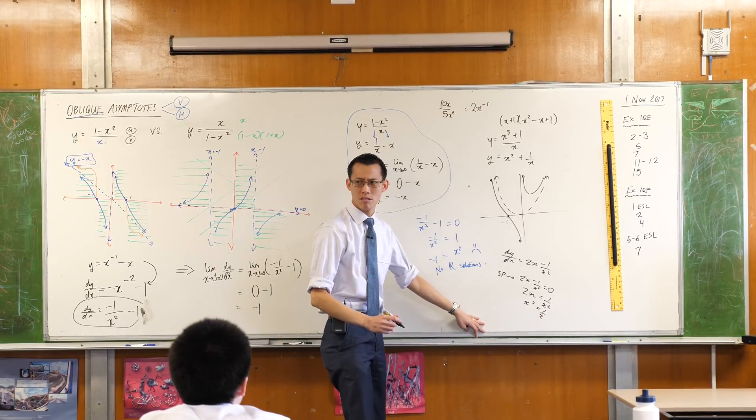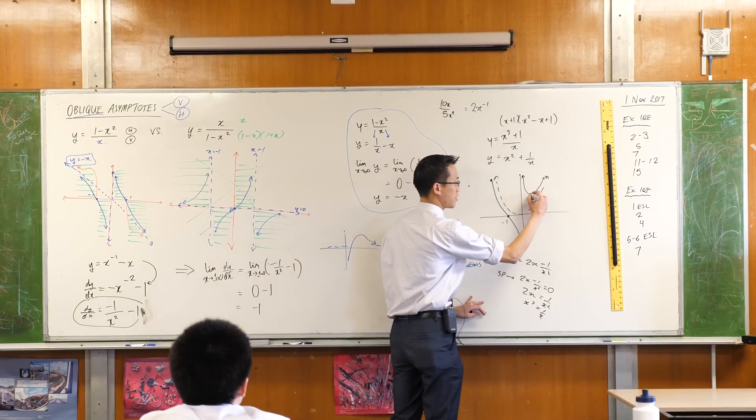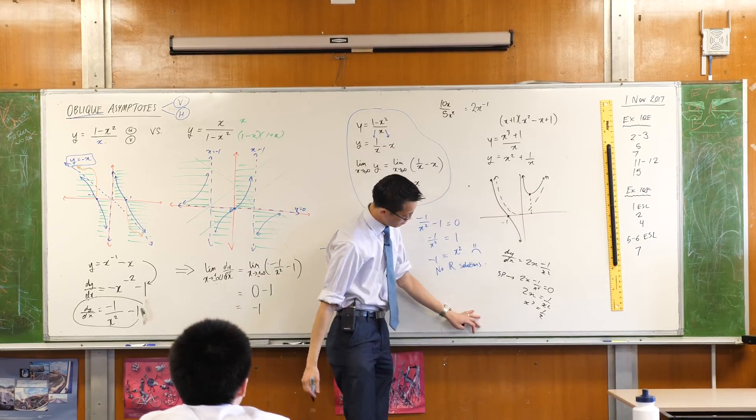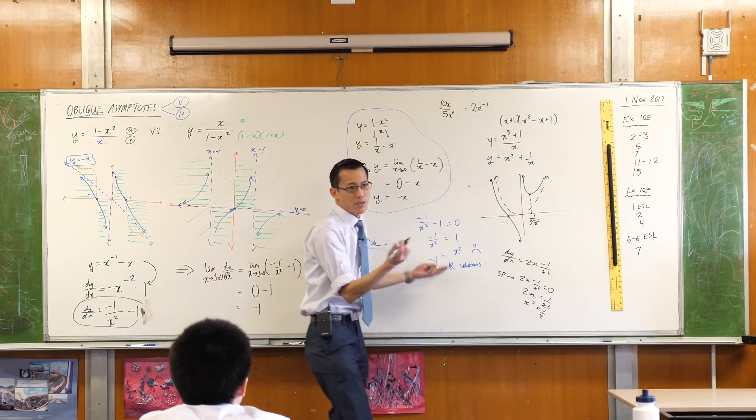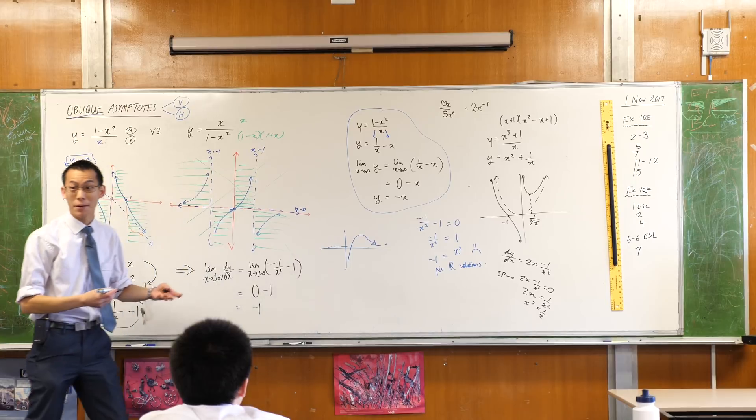x cubed equals 1 half. Does that look okay? So what's this x-coordinate going to be? I think it's going to be 1 on the cube root of 2. Isn't it? Whatever that happens to be. I have no idea what it is, but there you go. Okay.